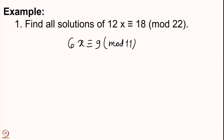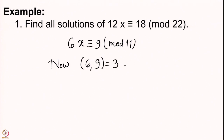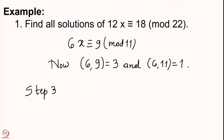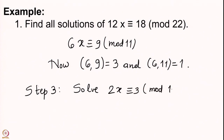Step 2: solve 6x ≡ 9 mod 11, where 6 = 12/2, 9 = 18/2, and 11 = 22/2. Now we observe that 6 and 9 have GCD 3, and gcd(6, 11) = 1. So we apply the second lemma.